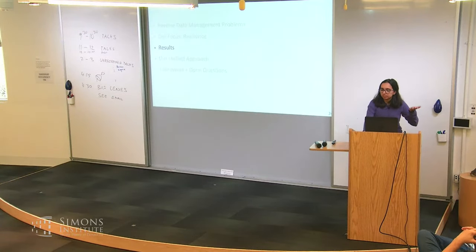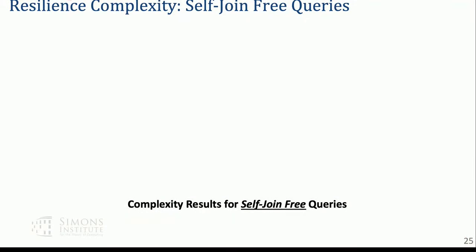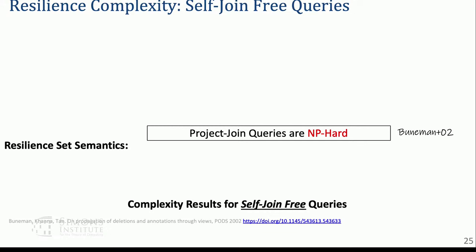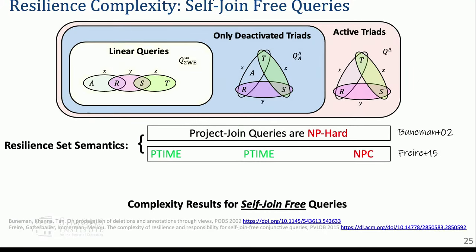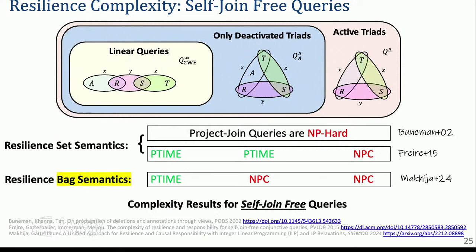For self-join-free queries, it was shown in 2002 that for project-join queries in general this problem is NP-hard, but you can find subclasses. In 2015, linear queries were shown to be in P-time — the intuition is that you have a join path instead of a join tree. There's another class convertible to linear queries, also in P-time. So for resilience under set semantics we have a dichotomy. What was not studied was bag semantics — needed when movies have multiple product placements or you have weights or probability distributions.